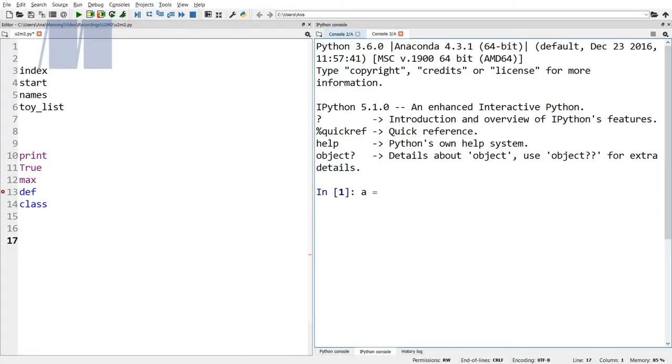Let's go to our IDE and type the following lines in the IPython console. a is equal to 1, enter, b is equal to 2, enter, and c is equal to a plus b, enter.